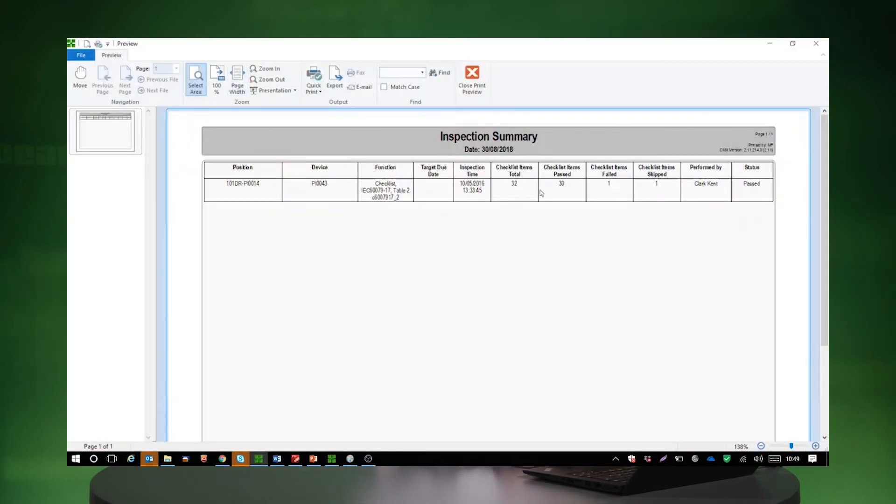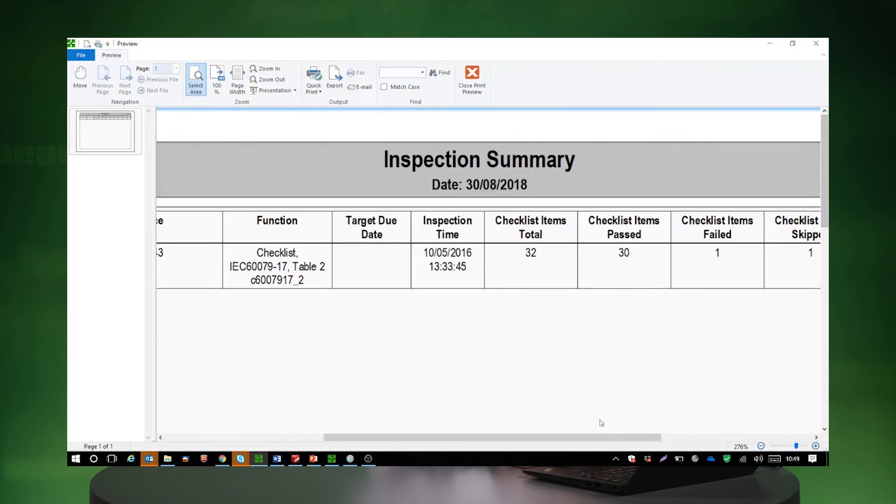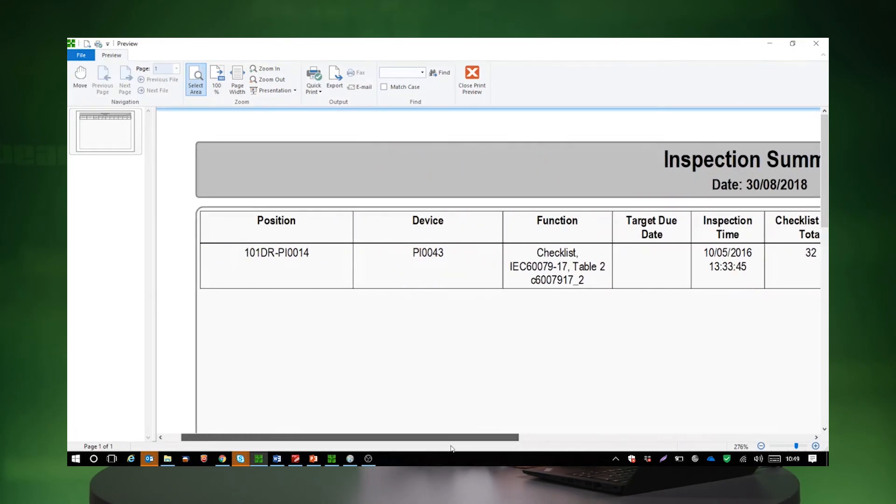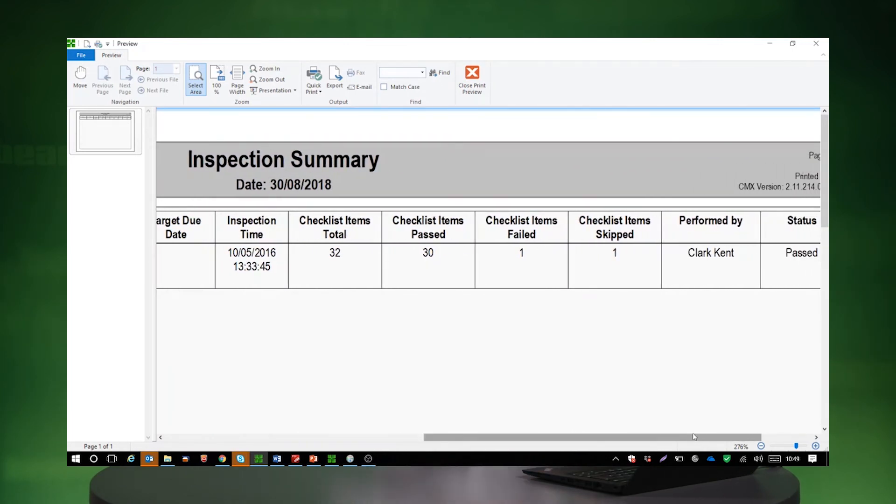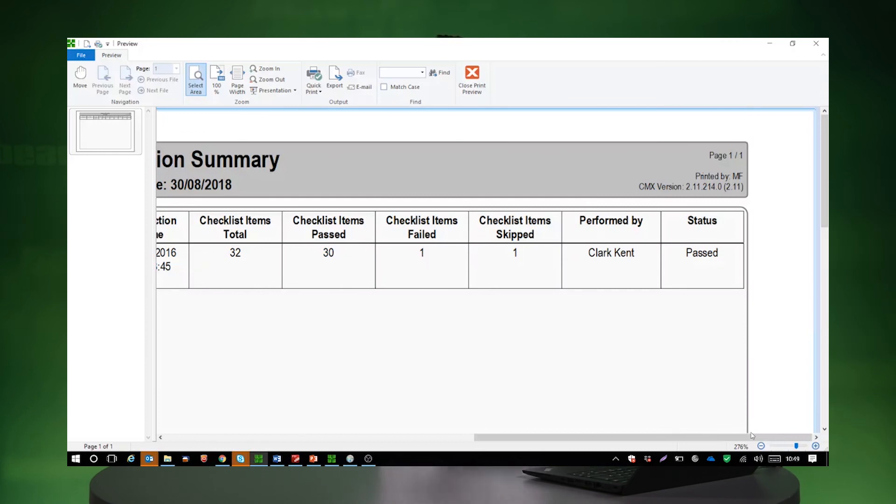So if we look at that, we can see inspection summary. And again, super simple way to present data. We can see we've done only one inspection here, a checklist, and we've got 32 items in it. 30 of them passed, one failed, one skipped. Who did it and what was the overall status of that? So again, super simple. You can right now PDF it, send it to someone, show it to your boss. This is what you've done, this is how you do it.